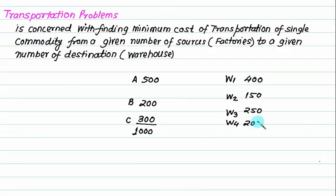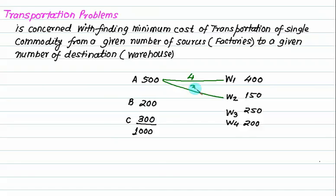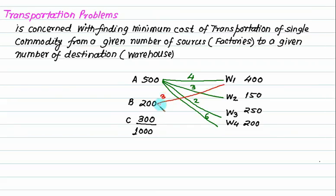A certain commodity produced at plant A has to be shifted from factory A to W1 to W3. Now if we move from A to B, depending upon the route, it has a certain cost. Let's say the cost per unit is Rs.4. If we shift from A to another warehouse, the cost is Rs.3, and another is Rs.2. Likewise, we have a complete cost matrix. Similarly, we can shift from B to different warehouses at costs of Rs.3, Rs.5, Rs.8, and so on. The idea is how much commodity should be moved from A to different destinations so that demand and supply are both satisfied.